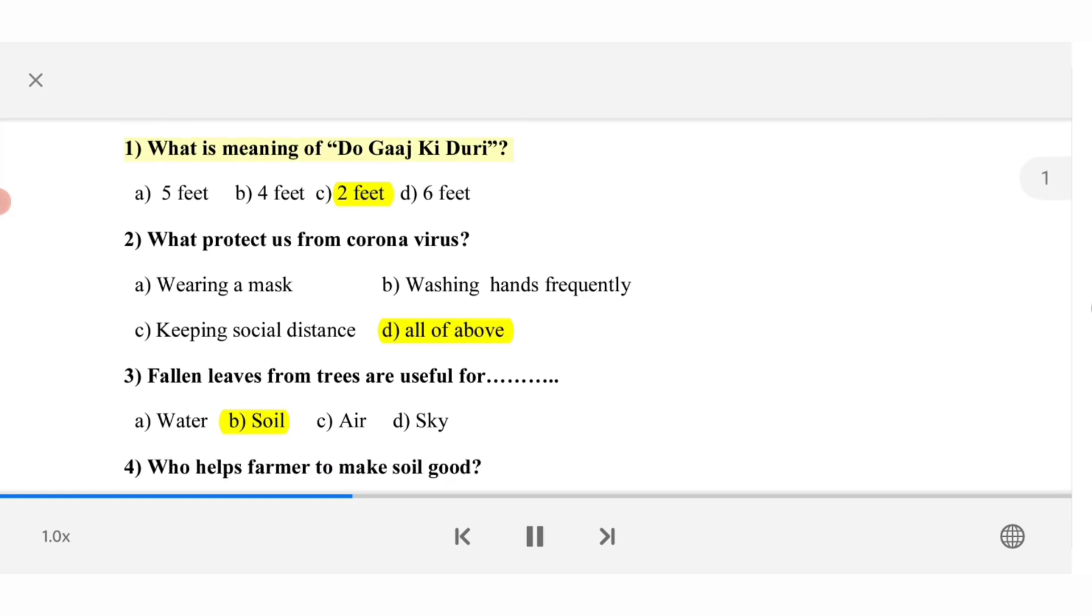1. What is meaning of do gaj ki doori? A. 5 feet. B. 4 feet. C. 2 feet. D. 6 feet. 2. What protect us from coronavirus? A. Wearing a mask. B. Washing hands frequently. C. Keeping social distance. D. All of above.